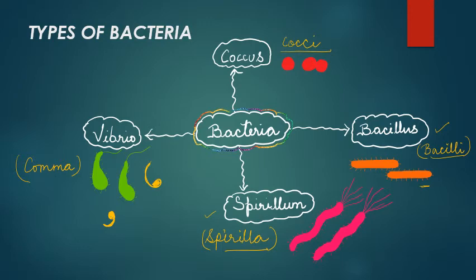So we have seen four different shapes of bacteria: the round-shaped coccus bacteria, rod-shaped bacillus bacteria, spiral-shaped spirillum bacteria, and comma-shaped vibrio bacteria.